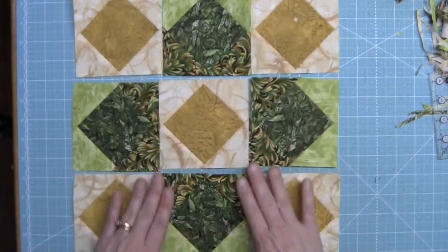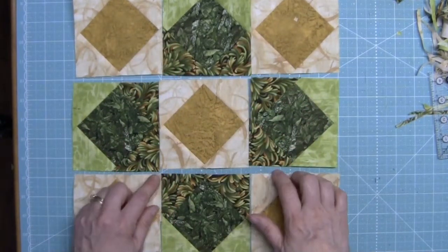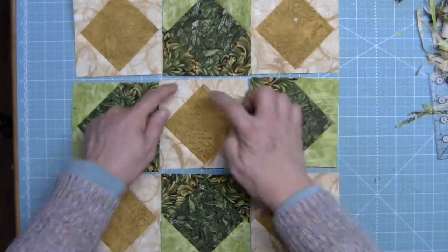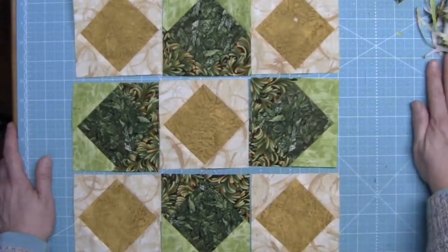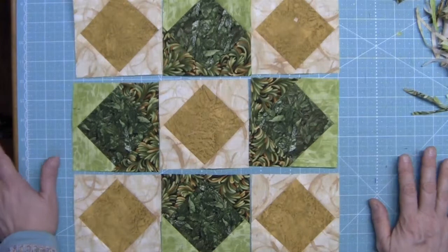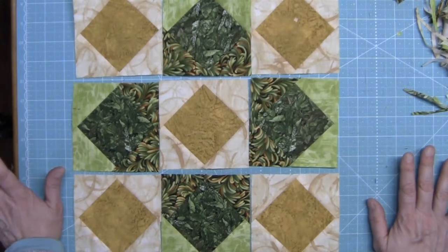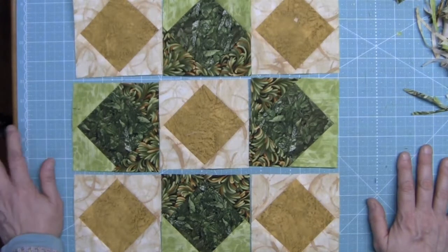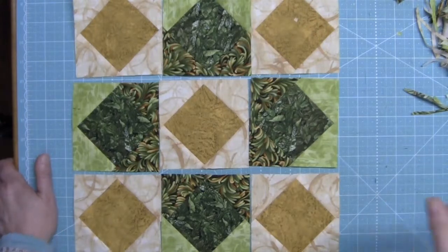So now we're going to stitch these together in rows. We're going to press the seam open in each one of our three rows, match up the seams, and stitch the rows together. Again pressing the seams open and I'll meet you back here to show you what our block looks like.